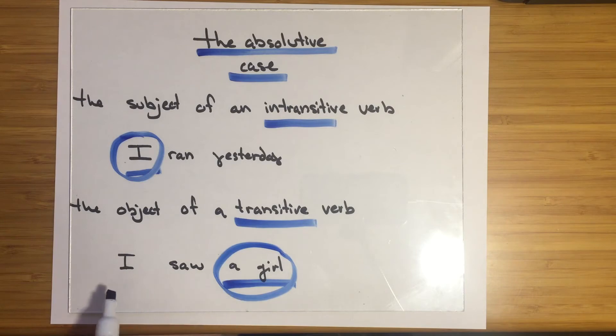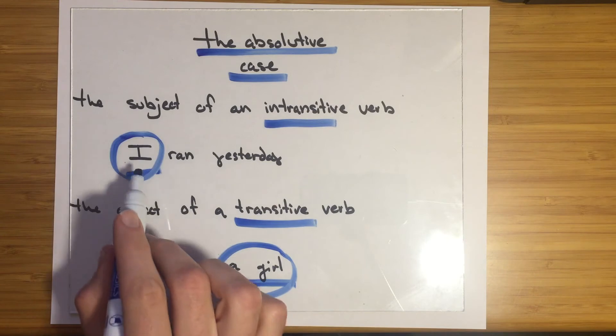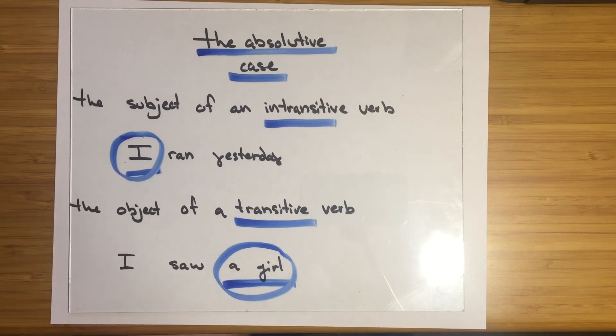So if this were a pronoun, he saw wouldn't be I, it would be me in English. Me is marked differently than I. You can tell they have different forms, me and I.